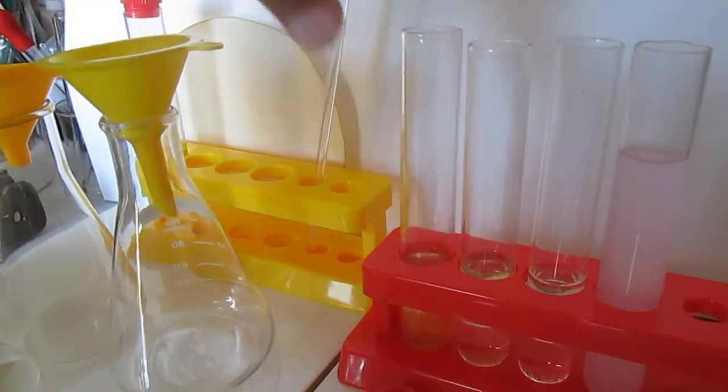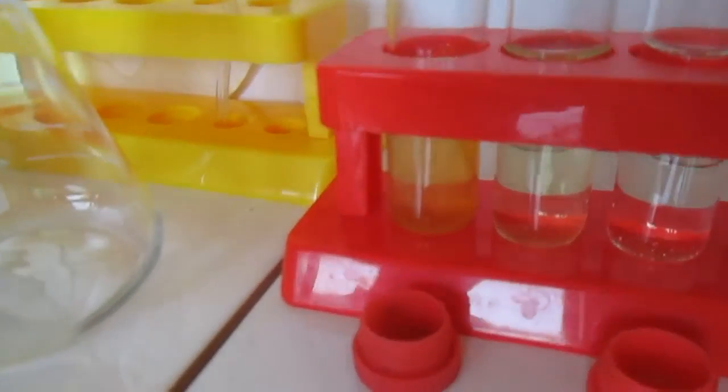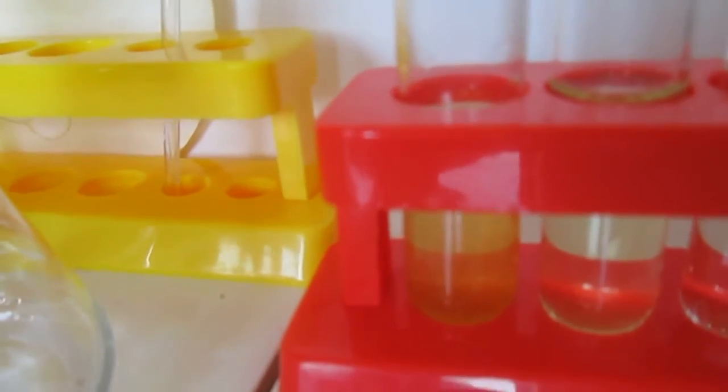In this first test tube I made a solution of ammonium iron sulfate. You can see that it is a very clear, very pale, brownish solution.